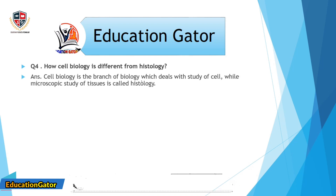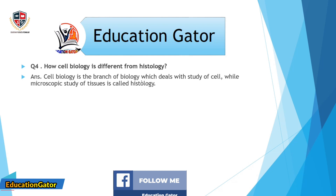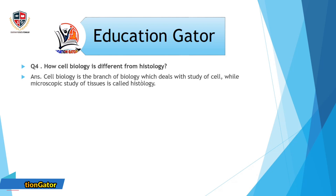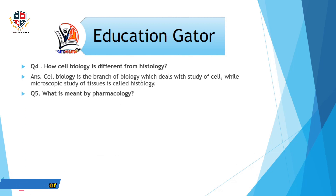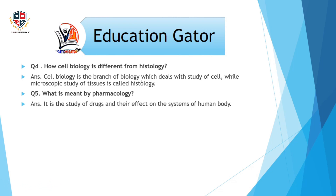Question number 4: How is cell biology different from histology? Ans. Cell biology is the branch of biology which deals with the study of the cell, while the microscopic study of tissues is called histology.